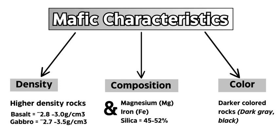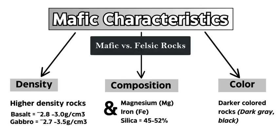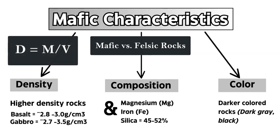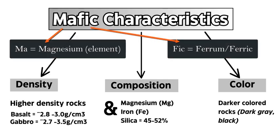An effective way to classify or differentiate between felsic and mafic rocks is by their characteristics. Mafic rocks are generally higher in density — more mass in a given volume. For example, basalt, a very classic and common mafic igneous rock, has a density of 2.8 to 3 grams per centimeter cubed. Gabbro, another common mafic igneous rock, is 2.7 to 3.5 grams per centimeter cubed.